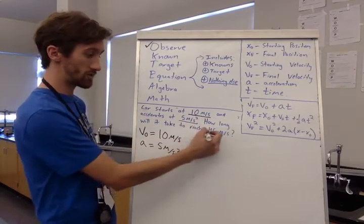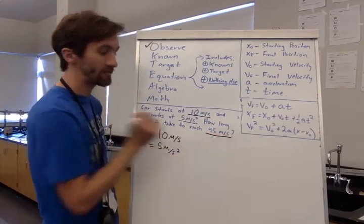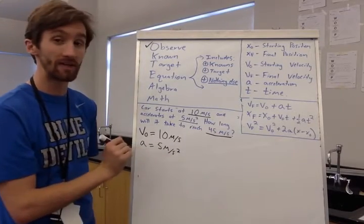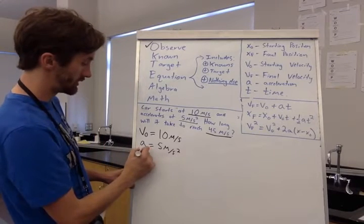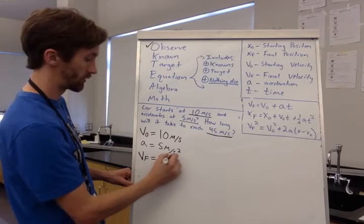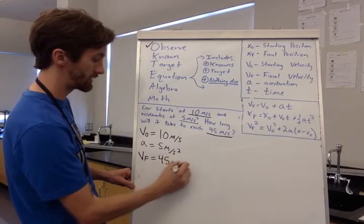How long will it take to reach 45 meters per second? If that's what I'm going for, that's what my velocity will be at the end of the problem. So my final velocity VF is 45 meters per second.